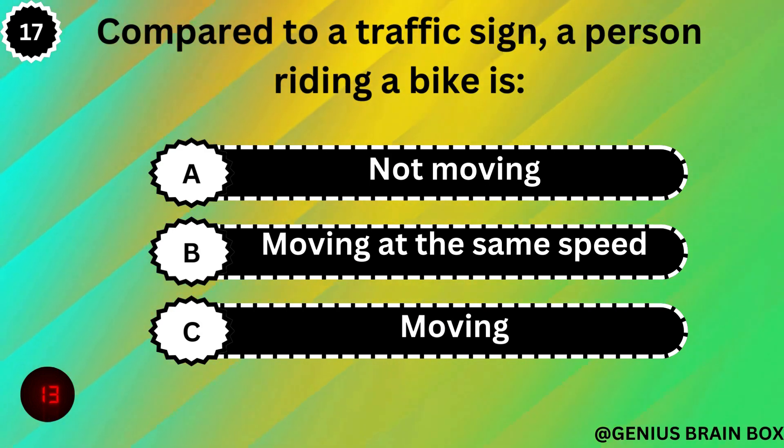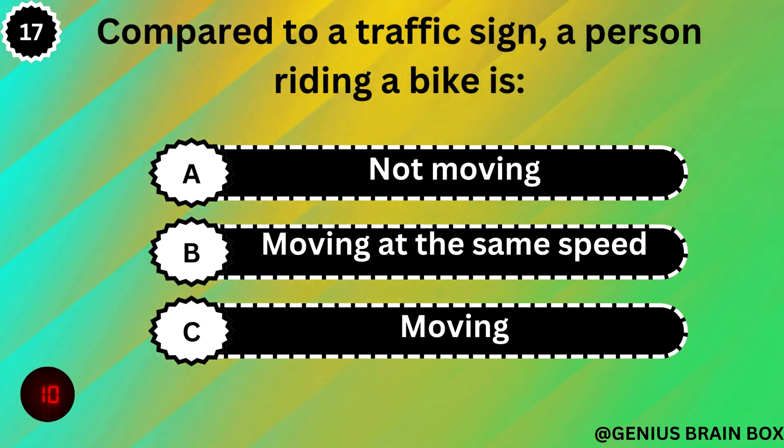Compared to a traffic sign, a person riding a bike is: not moving, moving at the same speed, or moving.